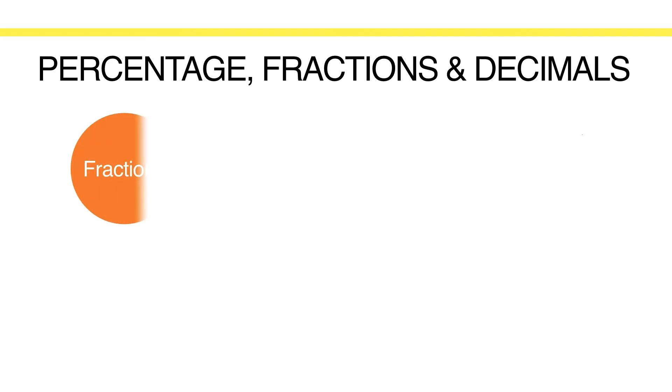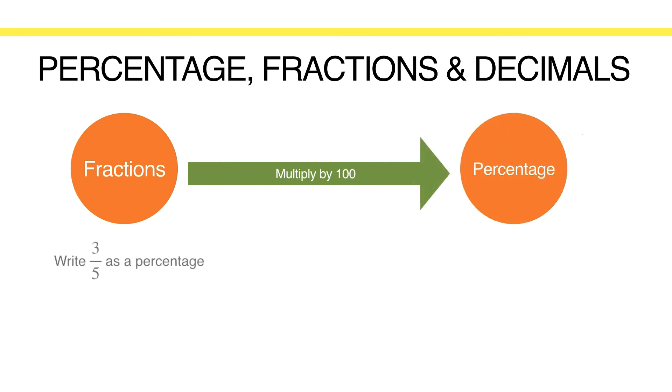Sometimes we can change a fraction directly to percentages by multiplying by 100. For example, if you want to write 3 over 5 as a percentage, we can simply multiply 3 over 5 by 100 in your calculator, which will give you 60%. Or you can also use the non-calculator way to simplify this fraction. Depending on the size of the numbers you are dealing with, we can cancel the fraction to simplest form. In this case, 5 divides both 5 and 100 to give 1 and 20. It then multiplies 20 with 3 to give you 60%. Don't forget the percentage symbol after converting.